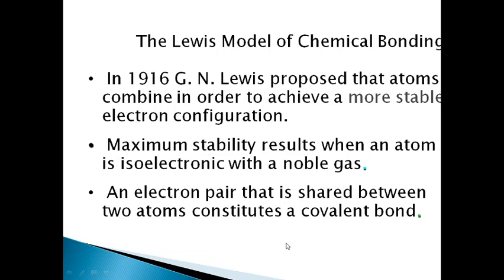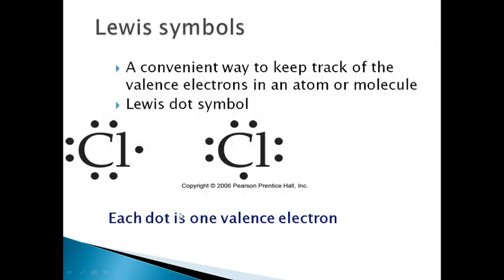An electron pair that is shared between two atoms constitutes a covalent bond — that is, the mutual sharing of electrons between two atoms. Lewis symbolized atoms using dot structures. For example, chlorine has 7 electrons in its valence shell. Lewis was able to symbolize atoms in this way.